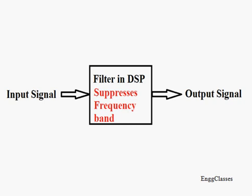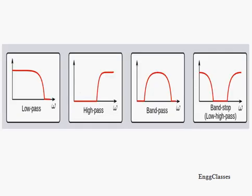To understand this, let me take a few examples. The first diagram is a low pass filter. As the name itself suggests, a low pass filter allows the low frequencies to pass through and thereby suppresses or filters out the high frequencies.